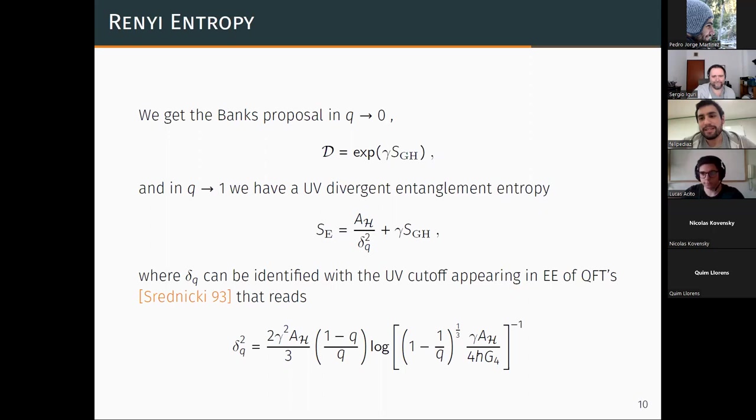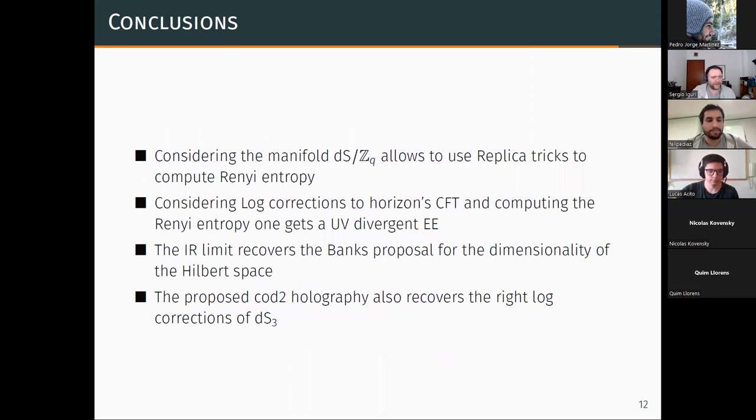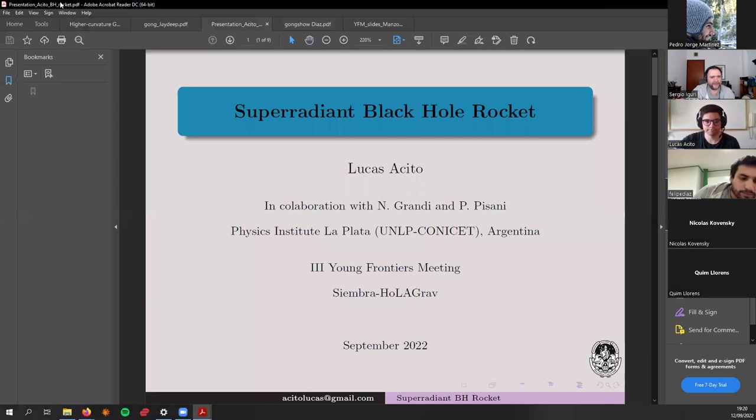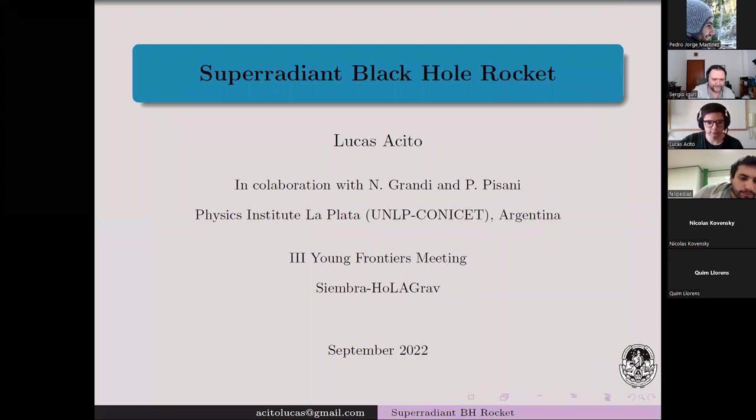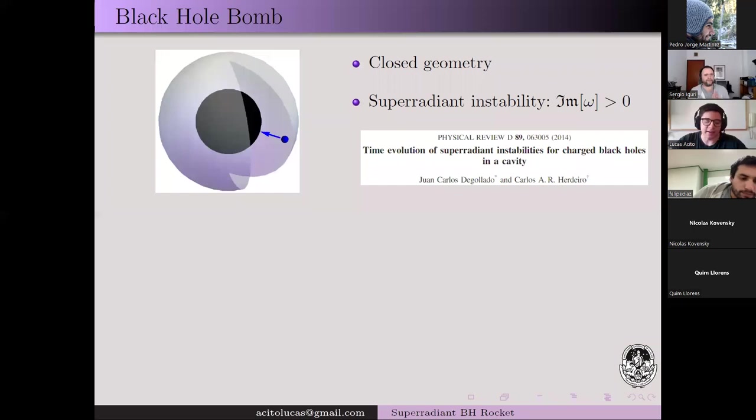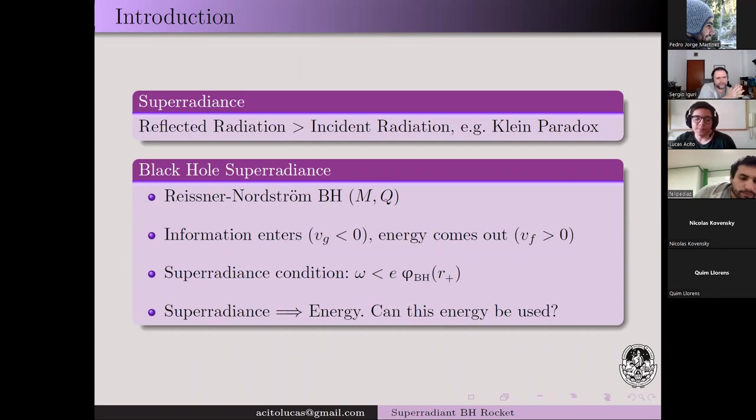Thank you. Our next speaker is Lucas Acito from Instituto de Física, and the title of the talk is Superradiant Black Hole Rockets. Hello, thank you for the introduction. I'm Lucas and we are going to see how it is possible to use the superradiance process on black holes to build a rocket. First, what is superradiance? It can be simply summarized as a process where the reflected radiation from the system is enhanced with respect to the incident radiation.